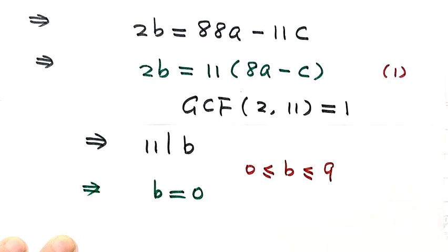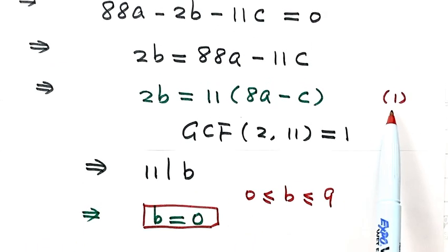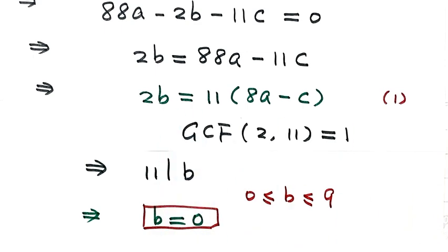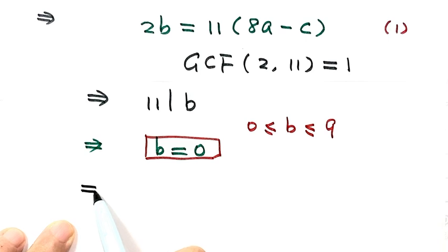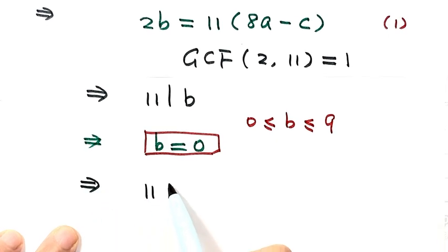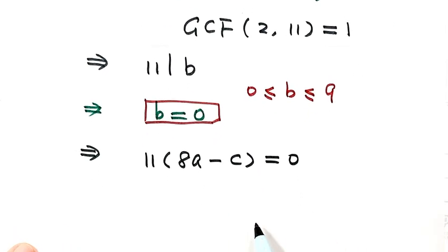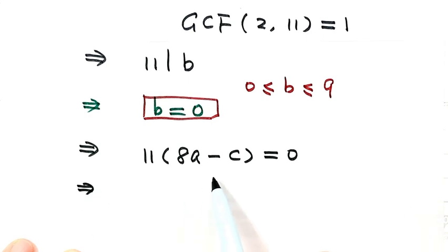Now let's use 0 to replace B in result 1. So then we have 11(8A - C) = 0. Then solve this equation. We have C = 8A.